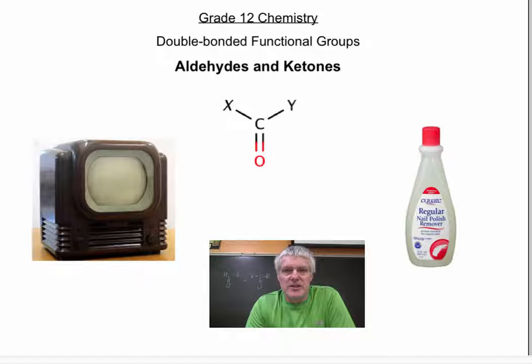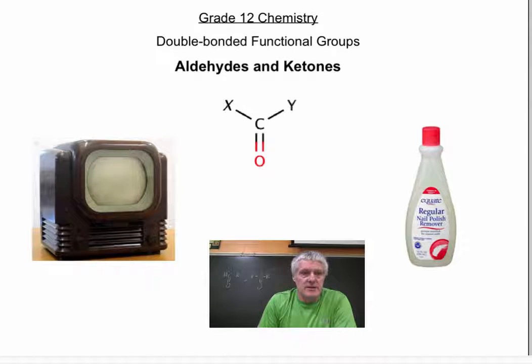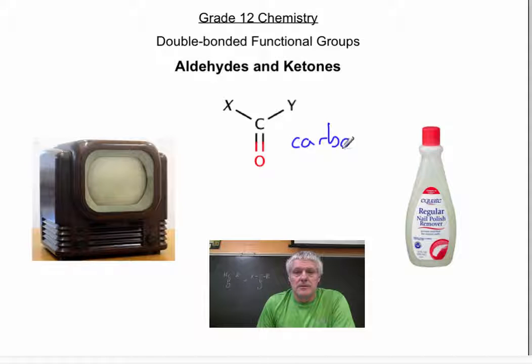Okay, here we go. We're into the double bonded functional groups now, and we're going to start with the first two families that contain a double bonded functional group. That would be the aldehydes and the ketones, and there's the functional group shown there. It's known as the carbonyl group, so carbon with a YL.